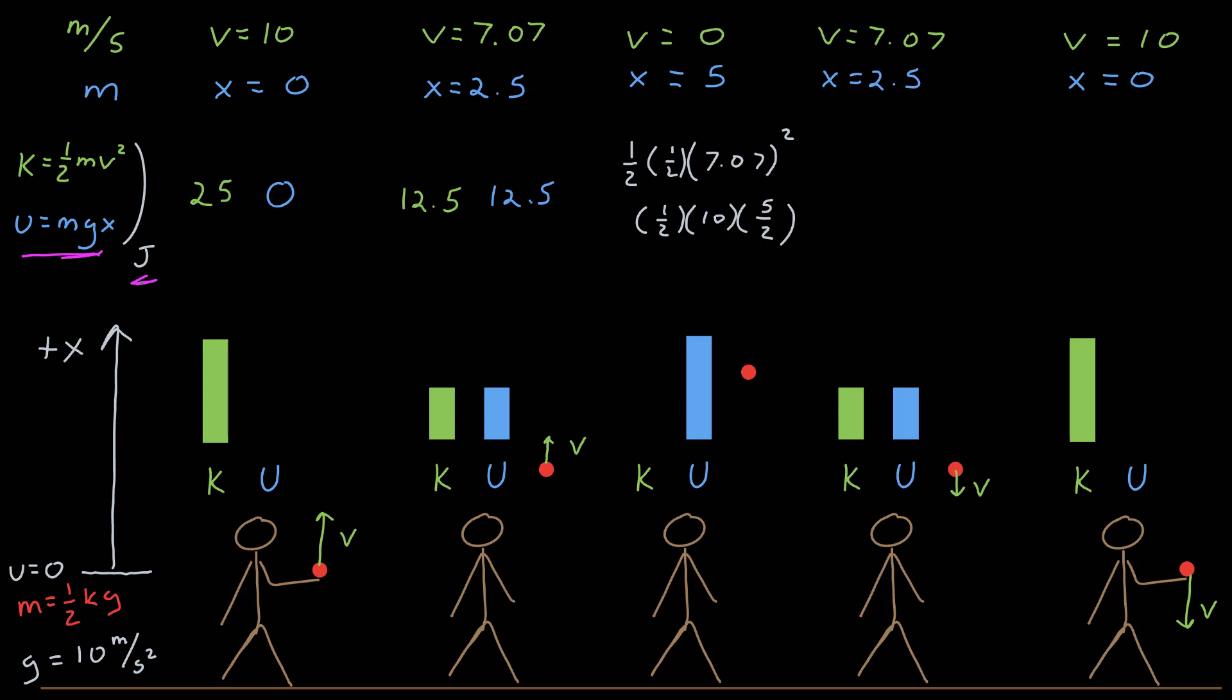What happens halfway up? Well, at halfway up, I have mass times one-half times the speed squared. Now remember, that was the square root of 50, so that squared is 50 divided by 4 is 12.5. And the position, I have the mass, which is one-half times the acceleration due to gravity times 2.5, which is 5 halves, is again 50 divided by 4, which is 12.5. So the energy is equal and half the kinetic energy at the beginning.